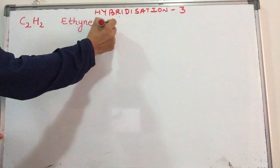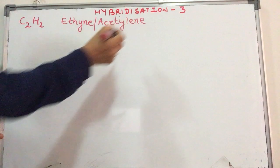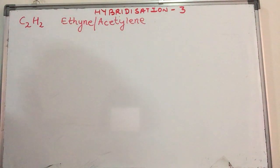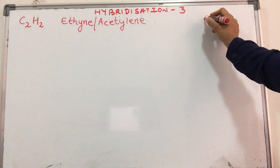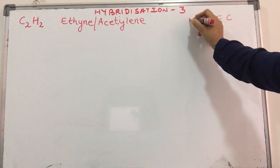Before watching this video, it is advised that you watch the other two videos where we have spoken about sp3 and sp2 hybridization to understand the concept. Here we are talking about ethyne, common name acetylene, where carbon is bonded to another carbon atom and a hydrogen atom.